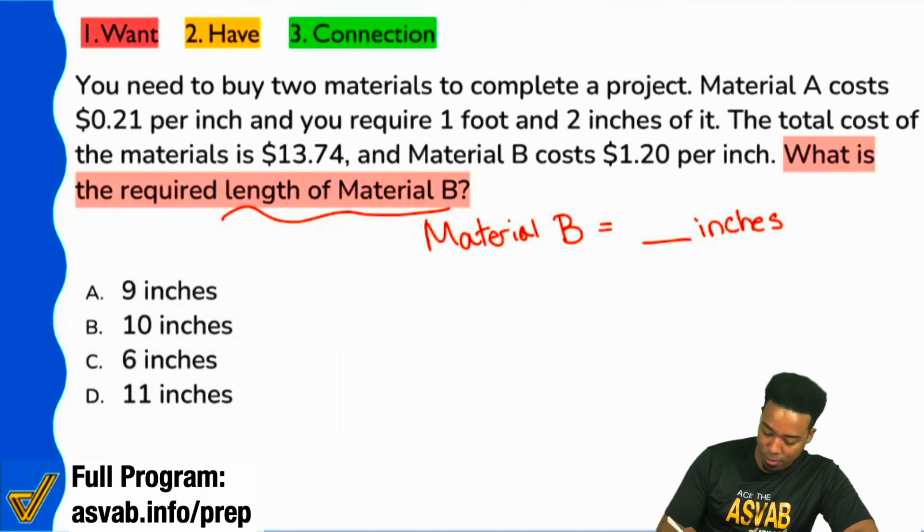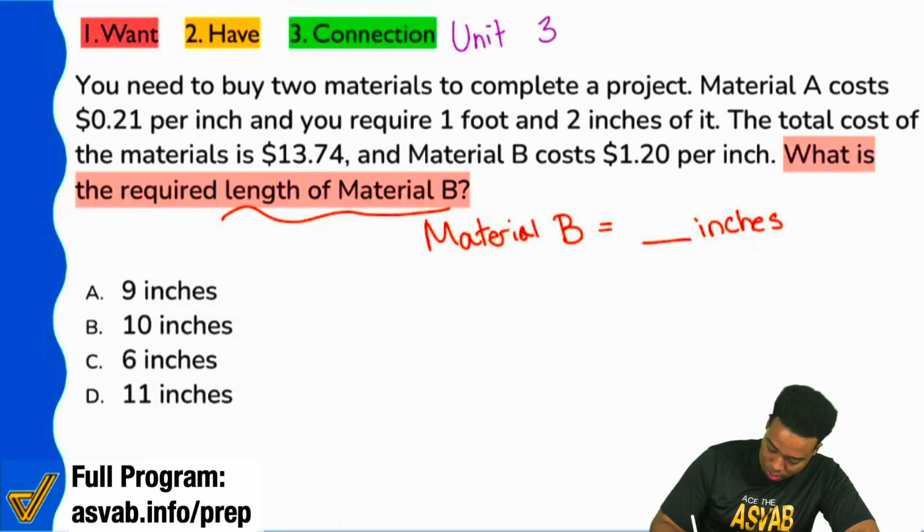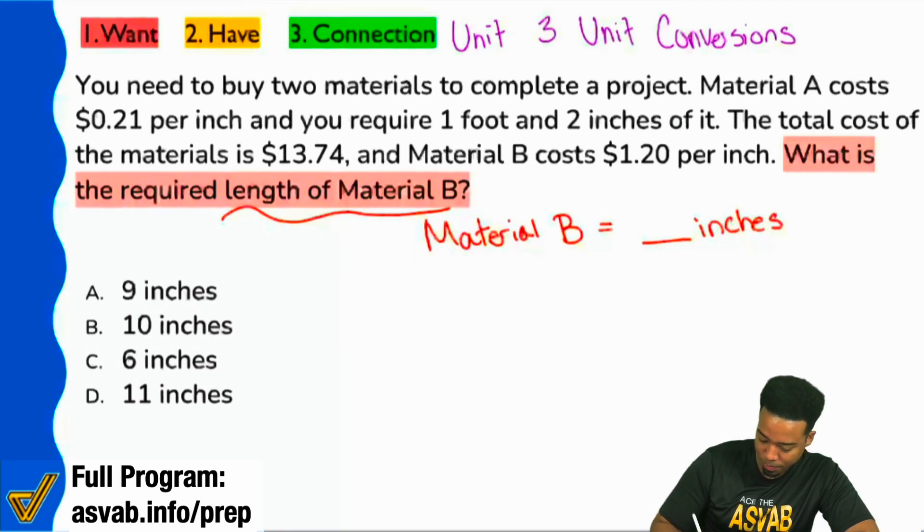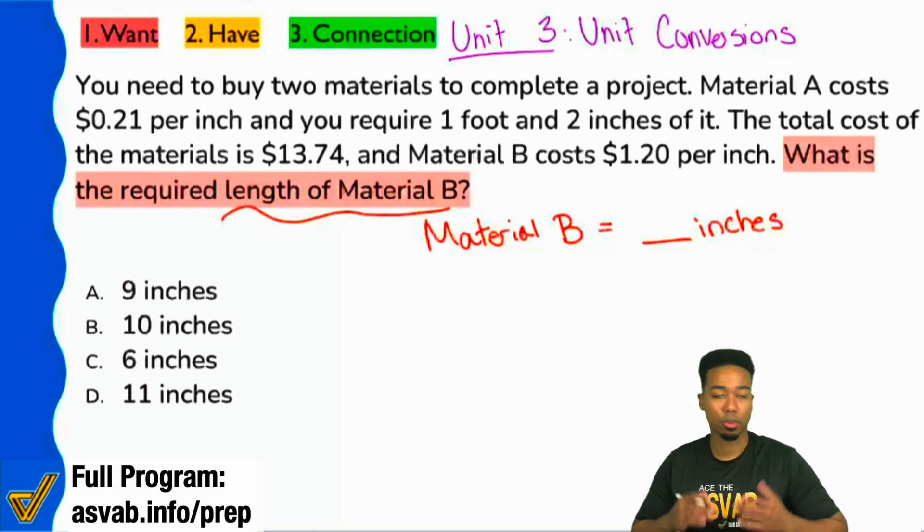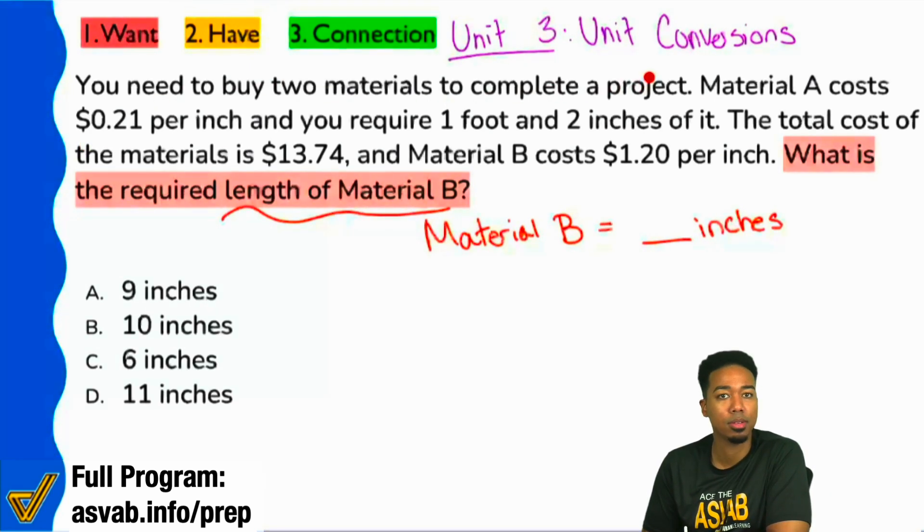Here we go. This is going to be from unit three, unit conversion word problems. Step one or step two here, what do we have? Let's read the information. You need to buy two materials to complete a project. Material A costs this much per inch and you require this much of it. The total cost of the materials is this much and this is how much material B costs per inch.